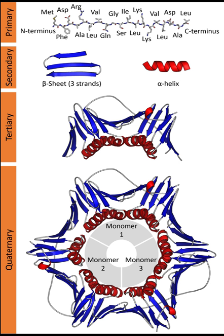The structure of these molecules may be considered at any of several length scales ranging from the level of individual atoms to the relationships among entire protein subunits. This useful distinction among scales is often expressed as a decomposition of molecular structure into four levels.